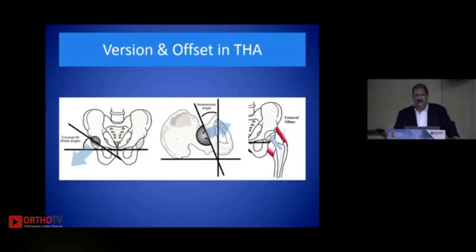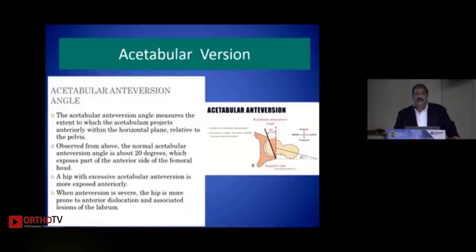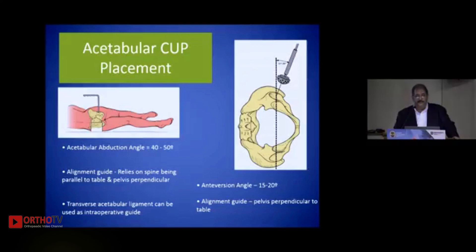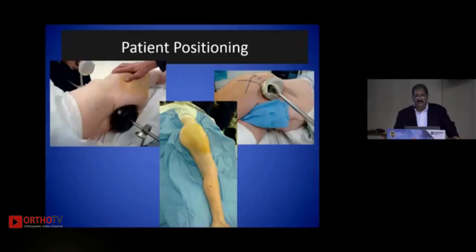Version and offset are two components which are in control of the operating surgeon, and we have to be very aware of how we restore these as much as possible. Acetabular version is the angle at which the acetabulum projects anteriorly from within the horizontal plane relative to the pelvis — usually around 20 degrees is the accepted norm. The positioning of the acetabular cup is critical, and we have to restore the version as well as the inclination. Patient positioning is crucial, whichever approach you choose.